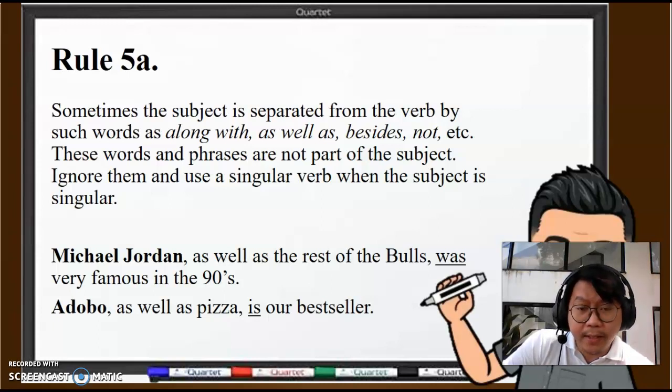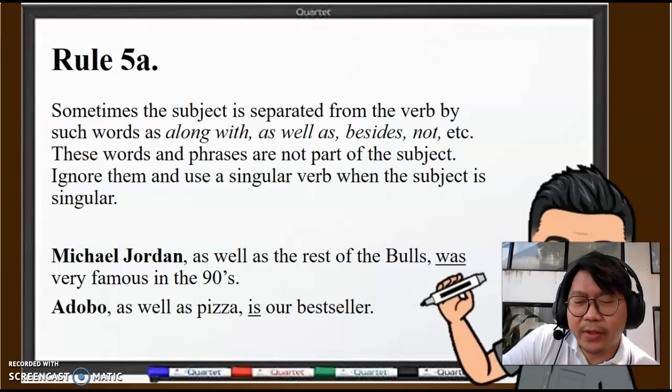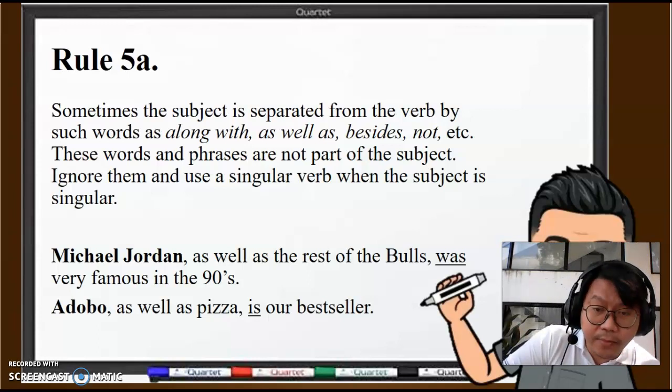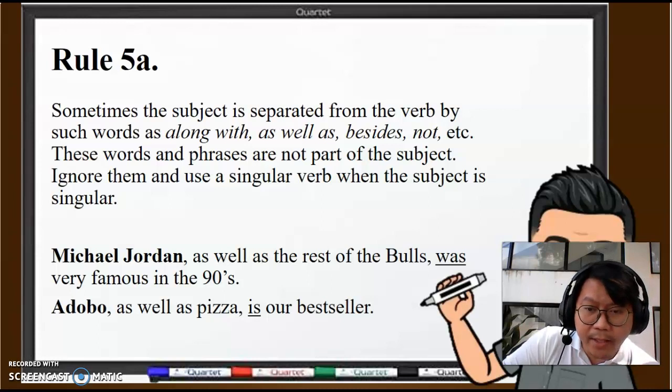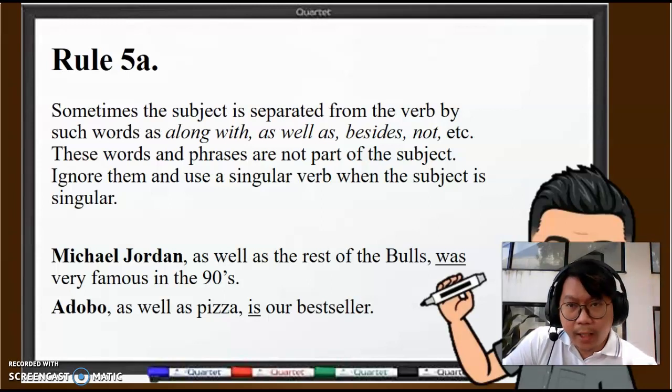Next example: Adobo, as well as pizza, is our best seller. Shout out to famous pizza. Adobo, it's in bold, that's the subject, singular, so therefore "is our best seller." But again, if we use the word "and" instead, adobo and pizza are our best sellers.